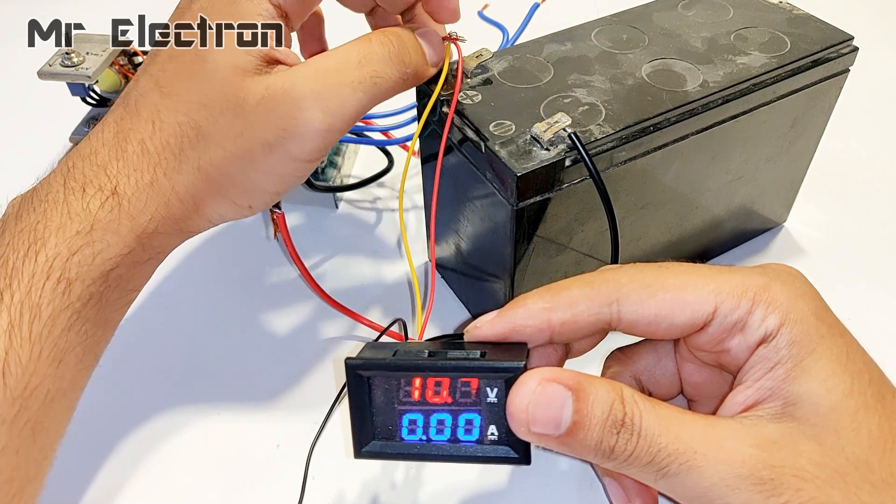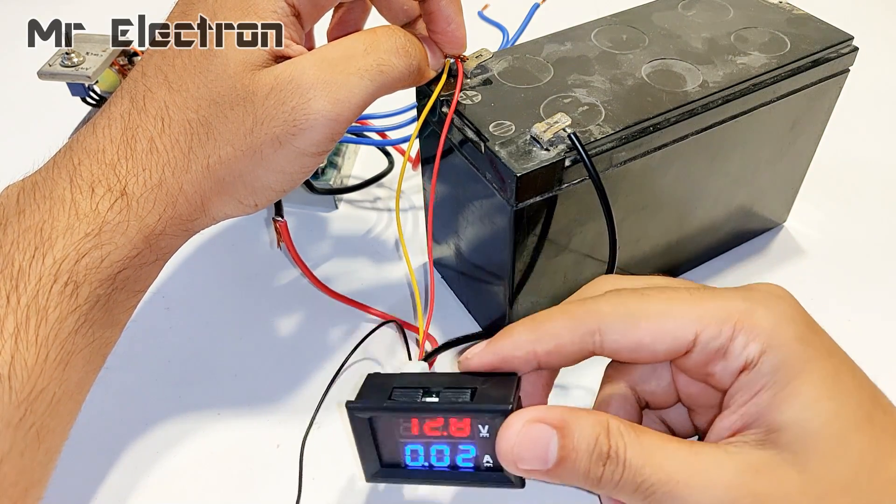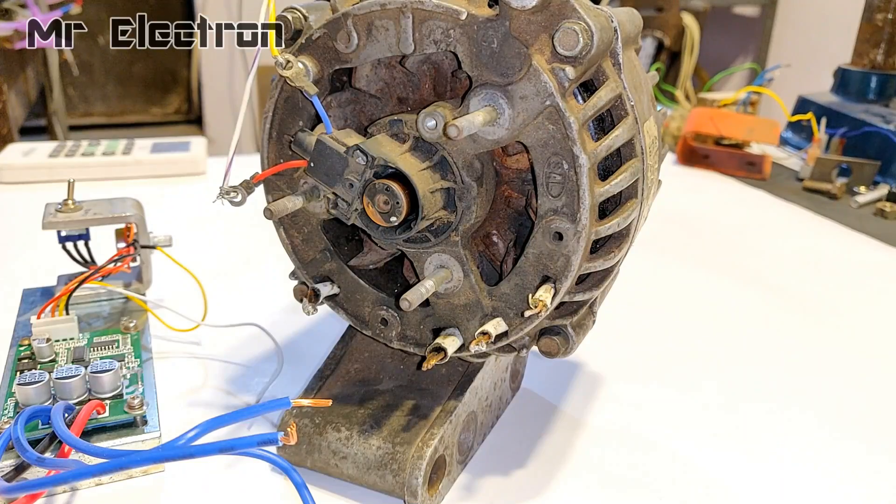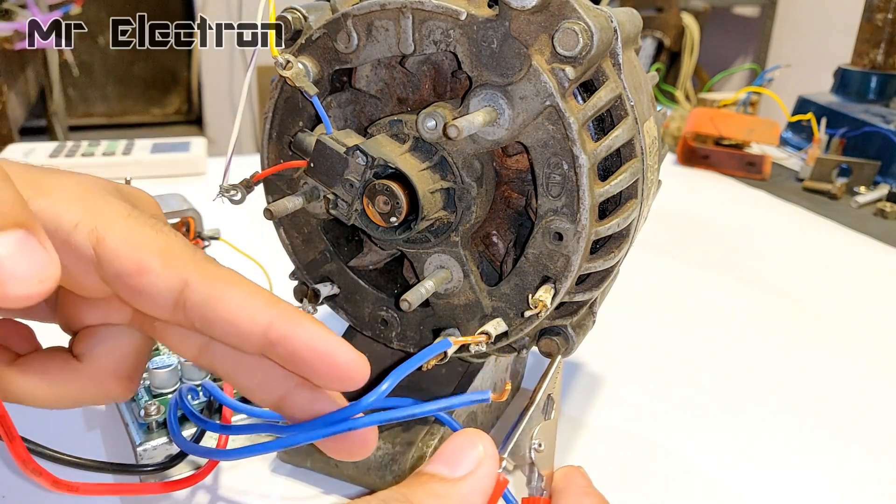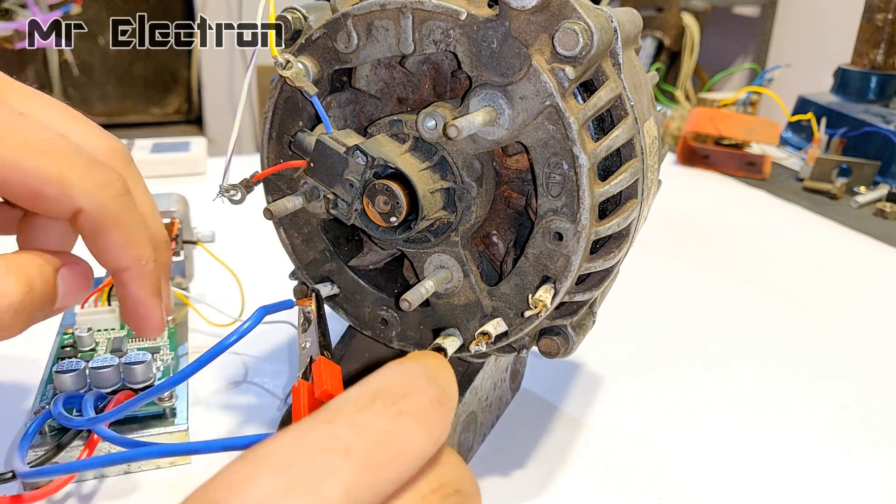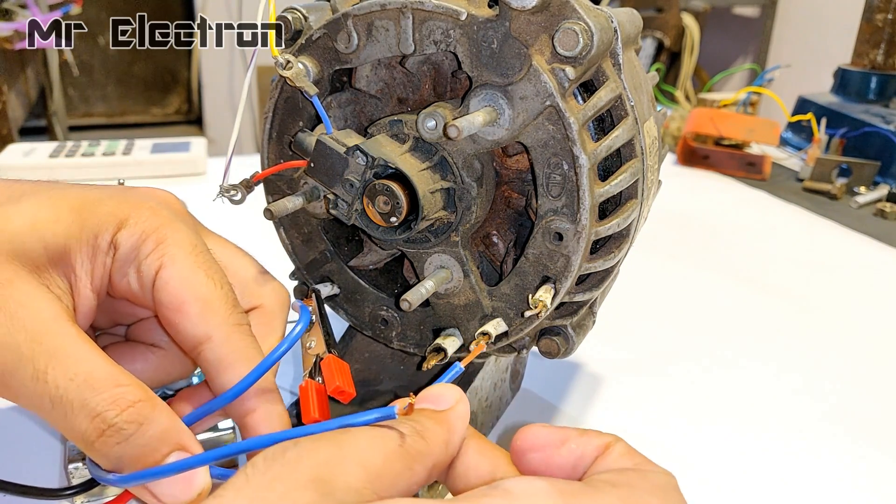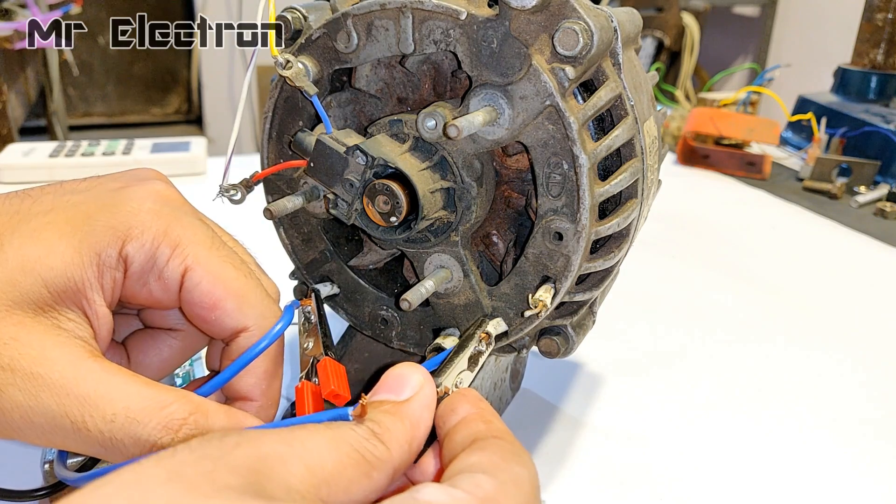You might see that the display is fluctuating. That is because the display is switching at a very high speed and I have recorded this video in 1080p 60fps. That high speed switching of the display screen of this multimeter can be seen at 60 frames per second, but it shows constant display when seen with the naked eye.